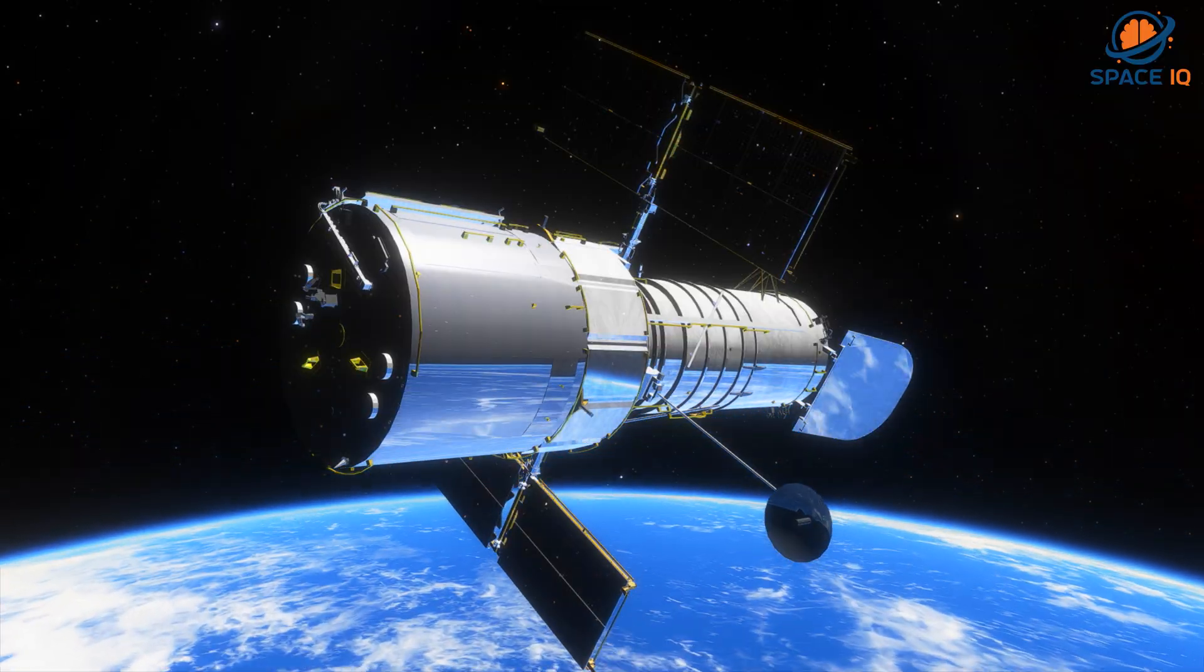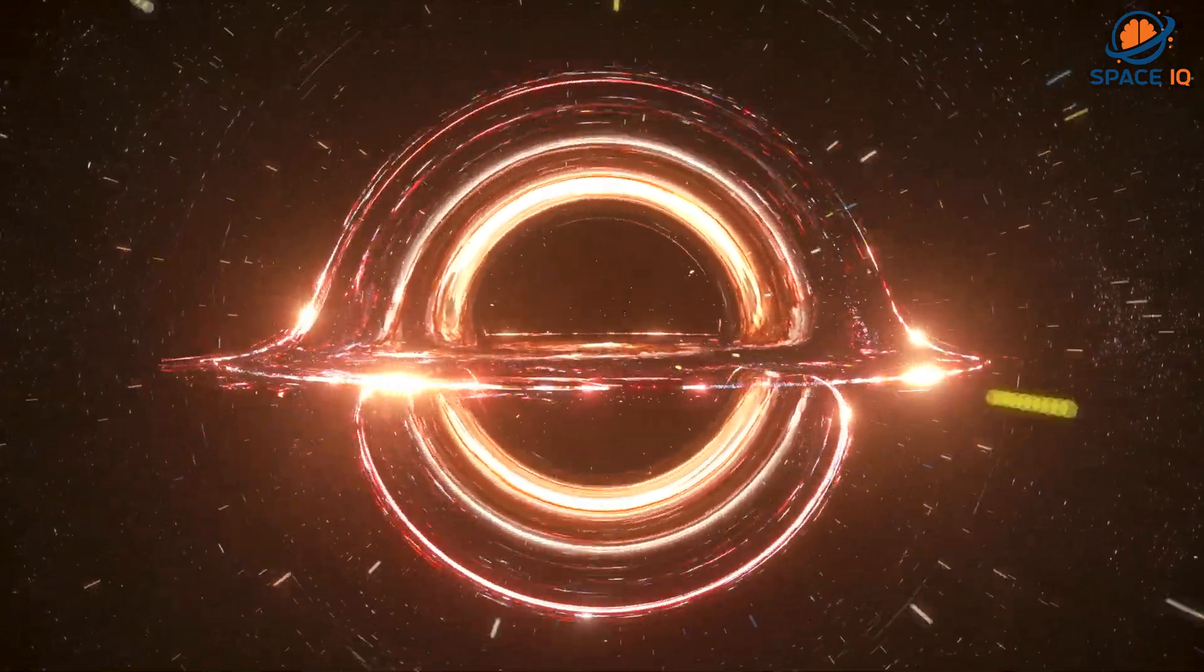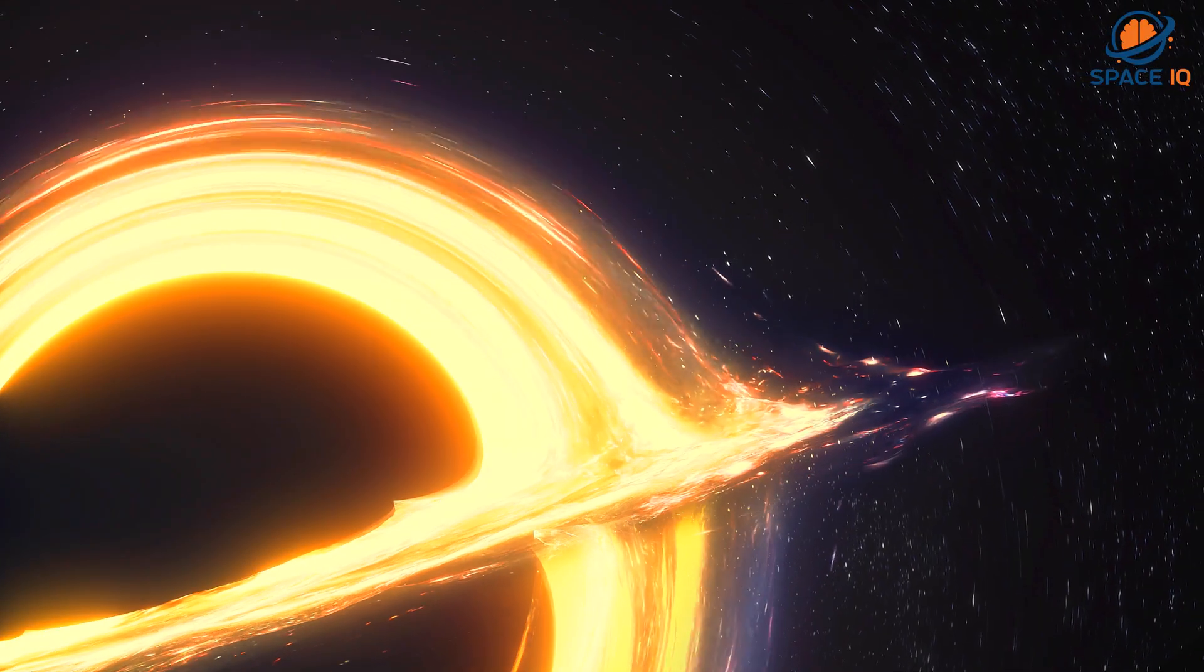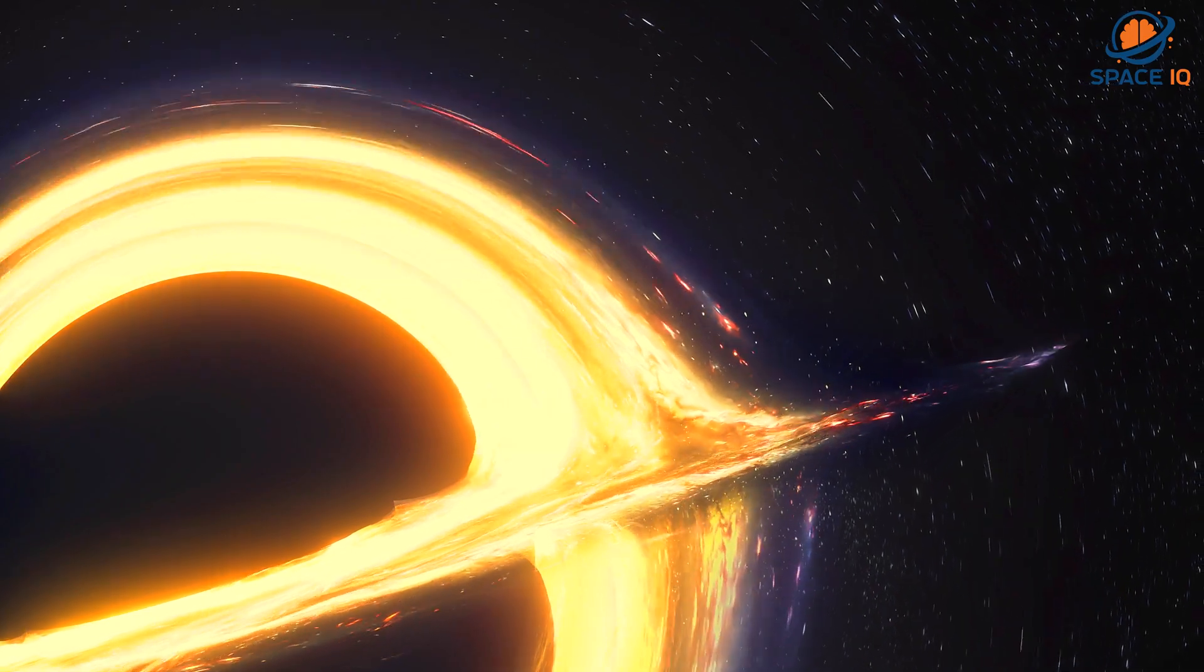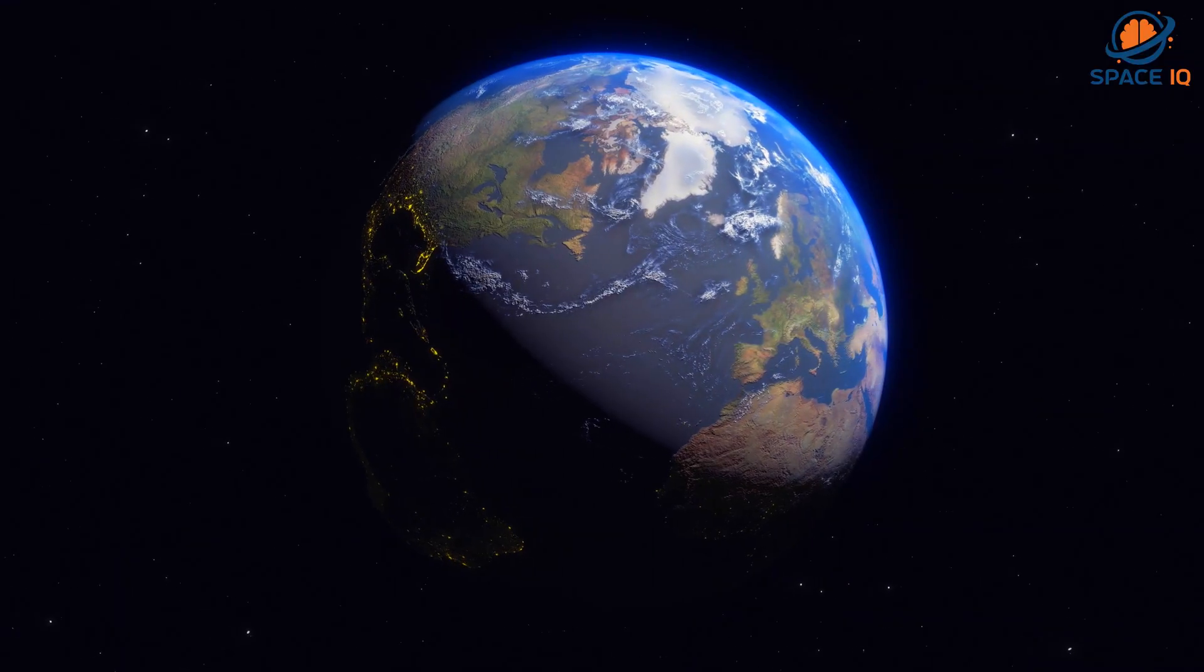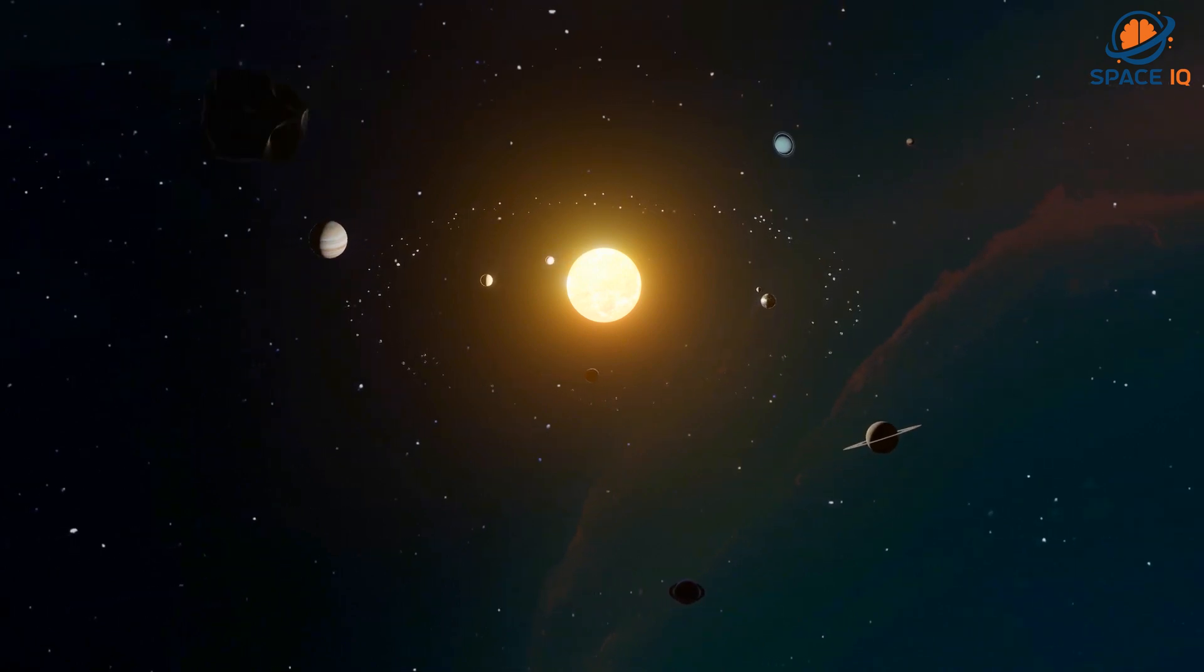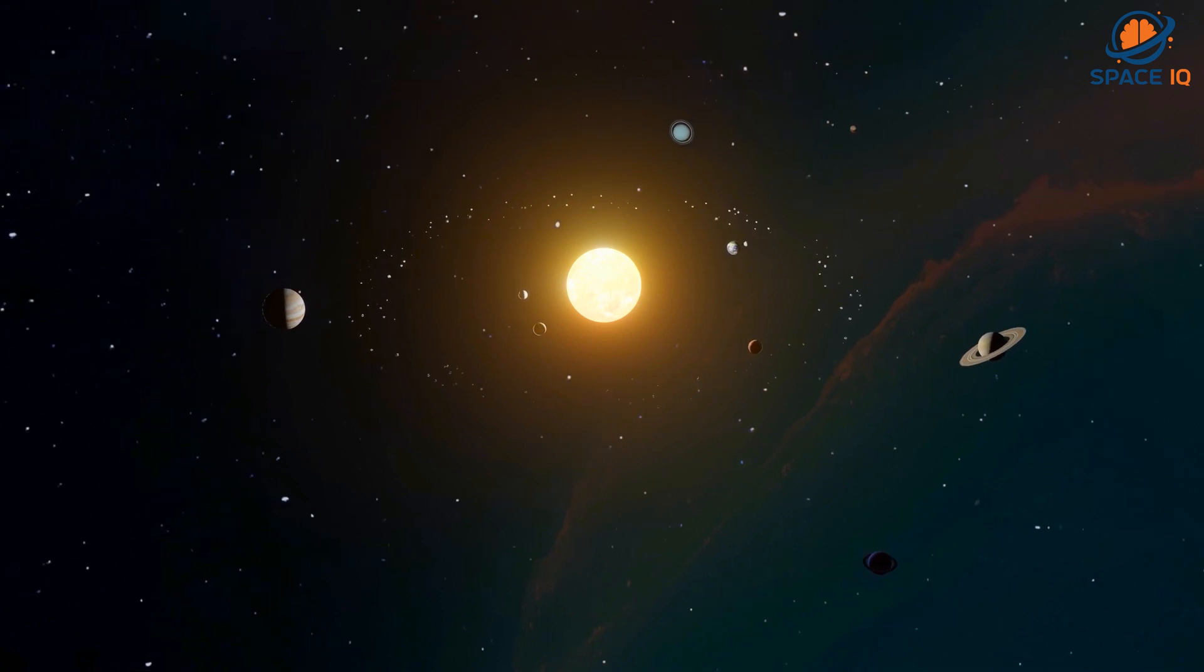Could a black hole destroy Earth? Even if a black hole the same mass as the sun were to take the place of the sun, Earth still would not fall in. The black hole would have the same gravity as the sun. Earth and the other planets would orbit the black hole as they orbit the sun now. The sun will never turn into a black hole. The sun is not a big enough star to make a black hole.